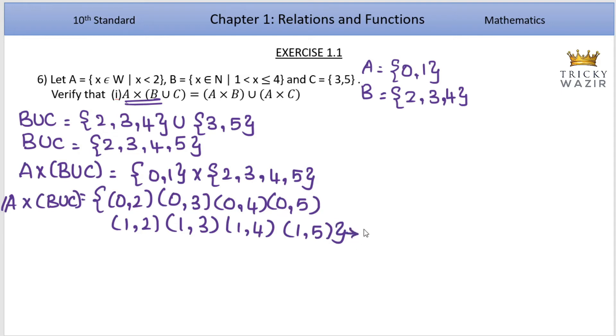Now RHS. A cross B union A cross C. First A cross B equals 0,1. B has elements 2,3,4.